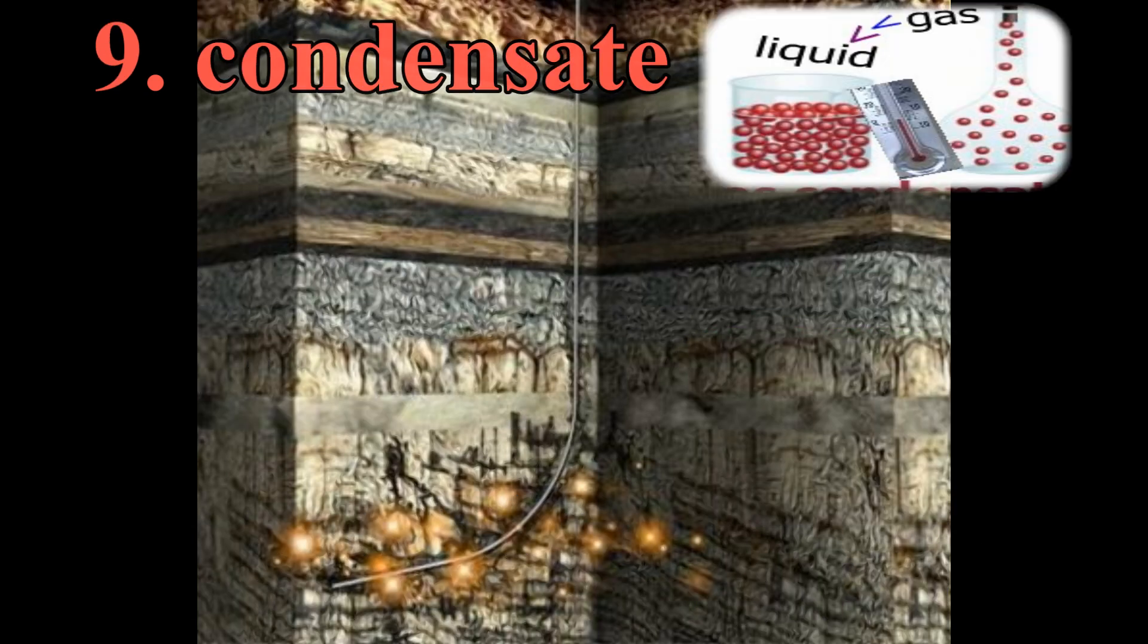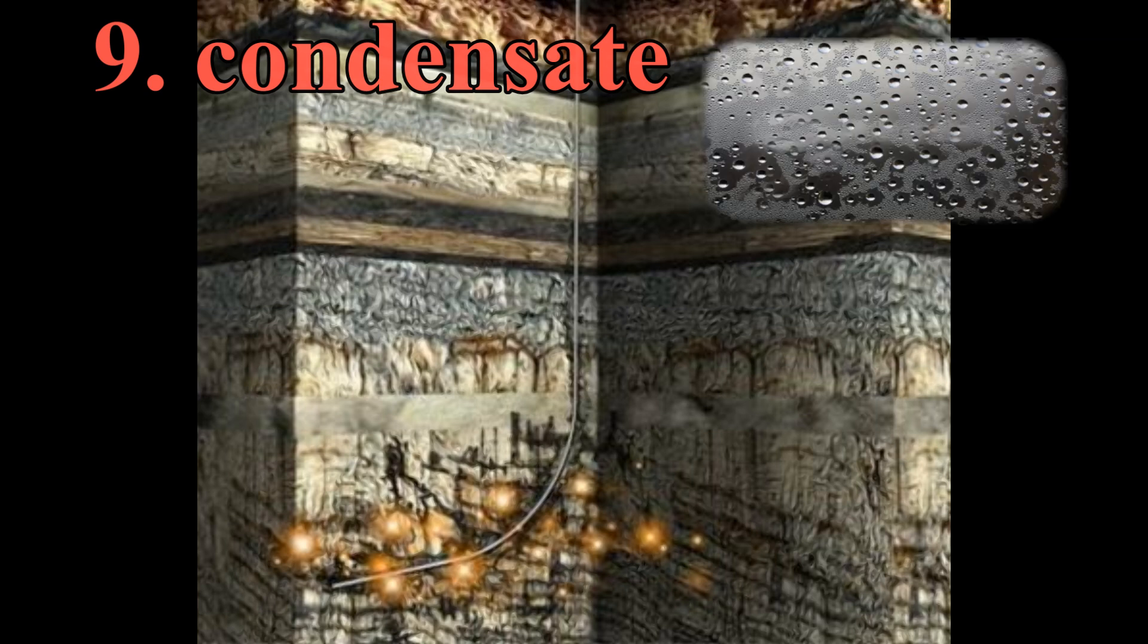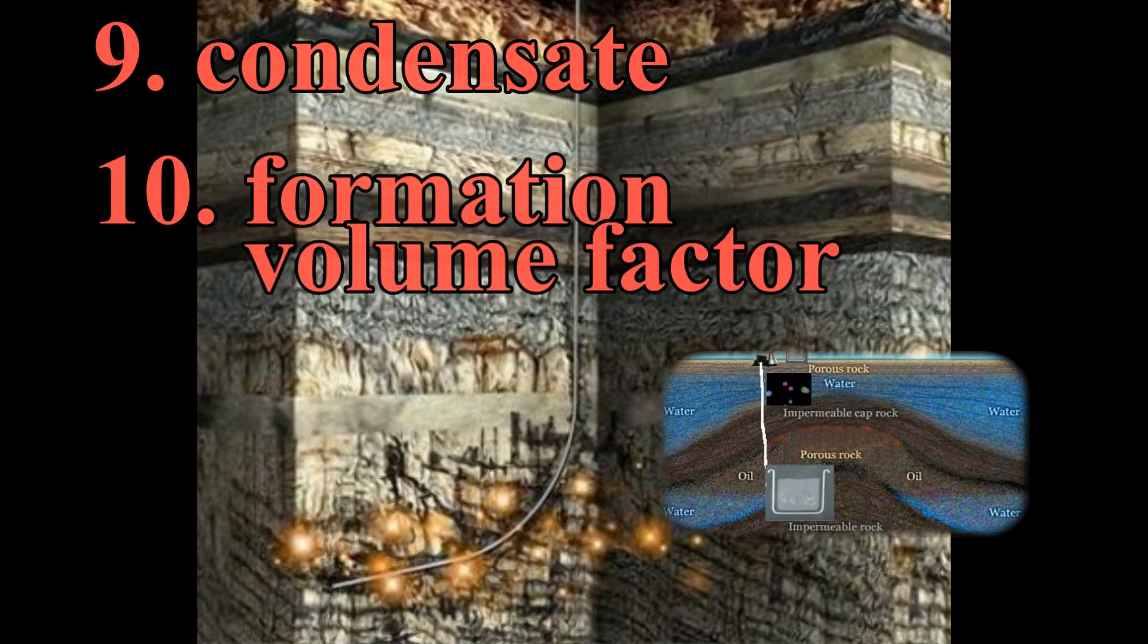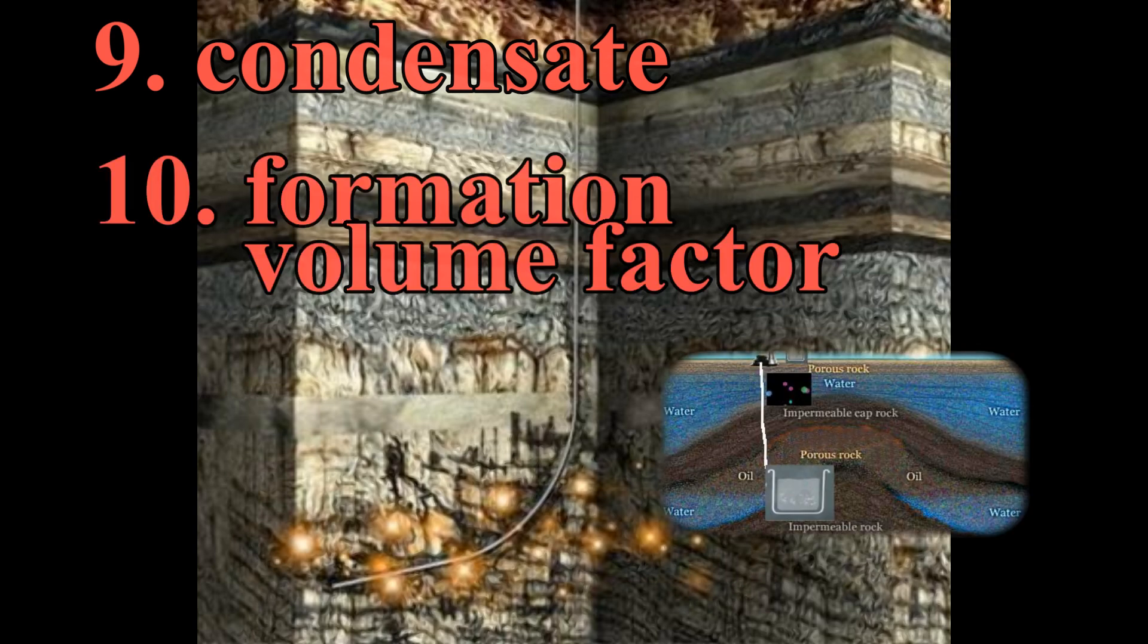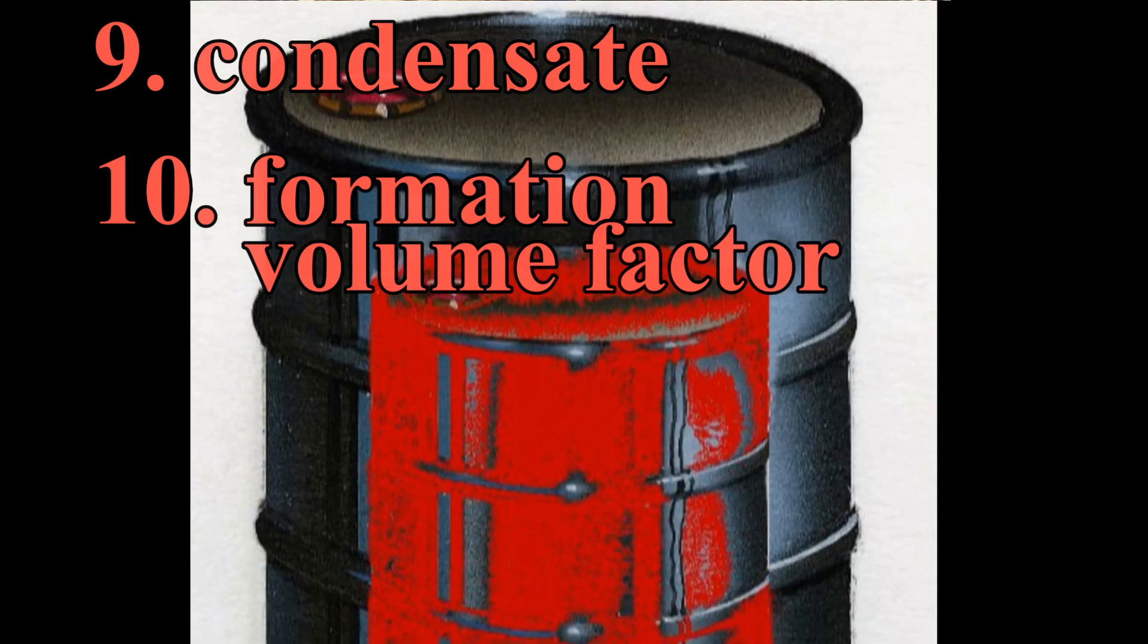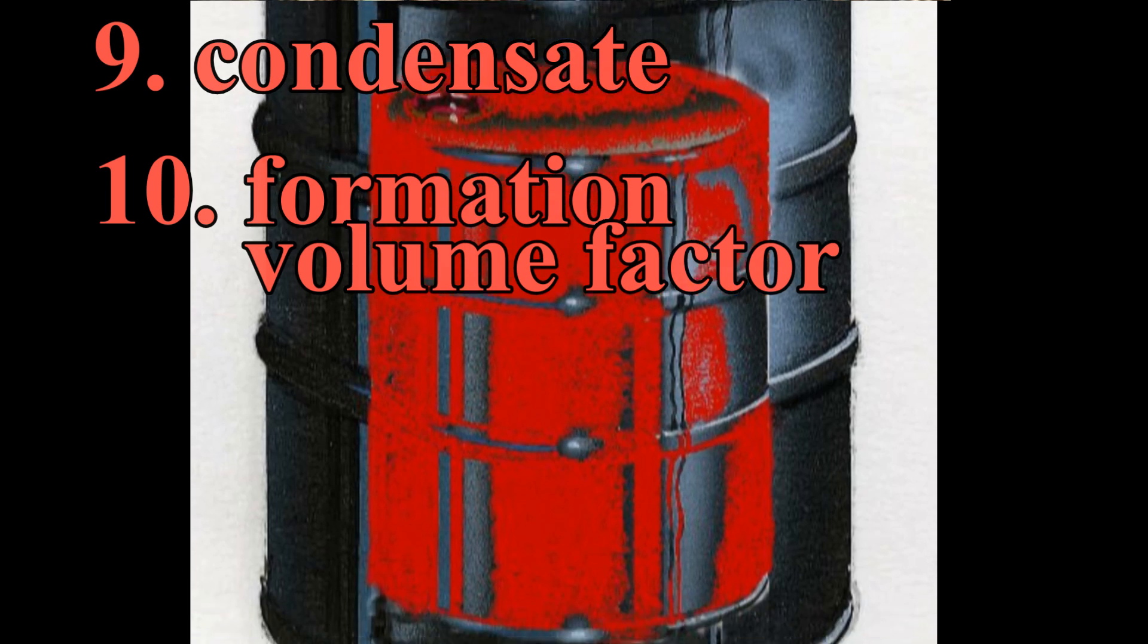9. Condensate is gas in the reservoir that converts to a liquid at surface atmospheric conditions, like steam on a mirror. 10. Formation volume factor, or beta, measures the shrinkage of the volume of the liquid as it moves from the reservoir to the surface.